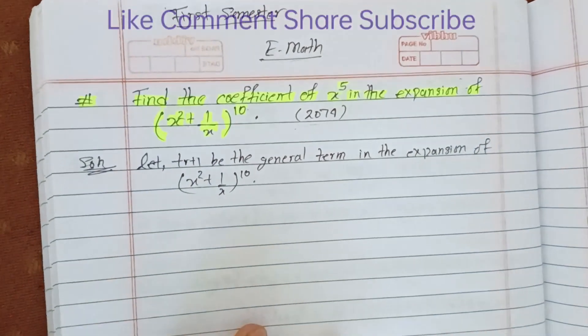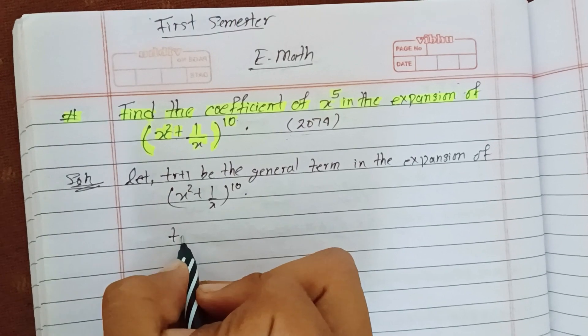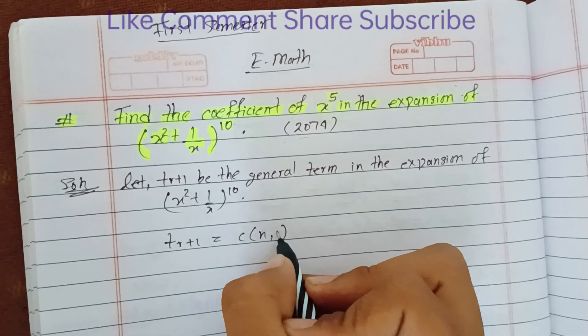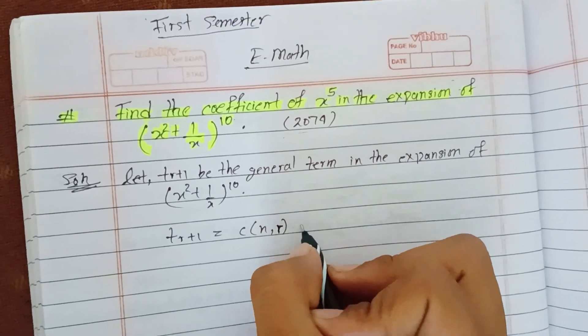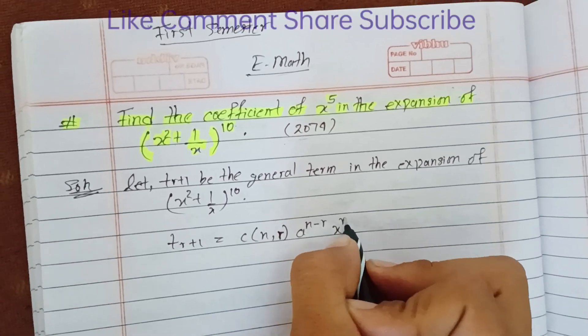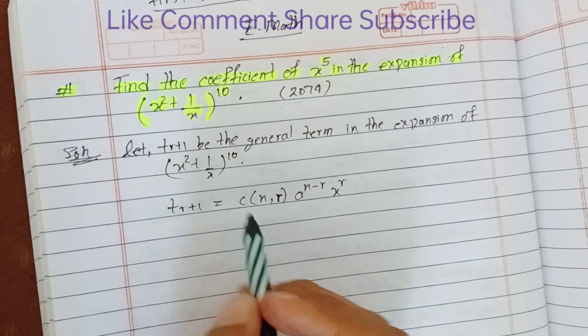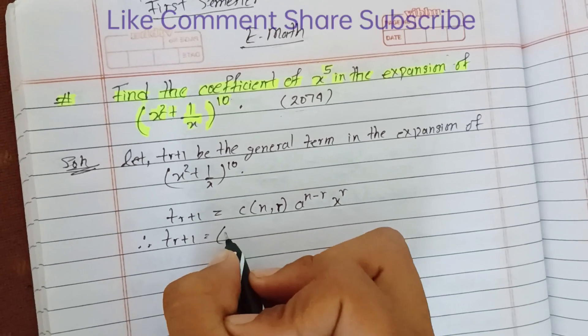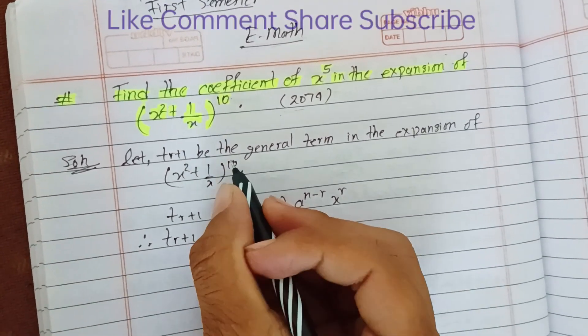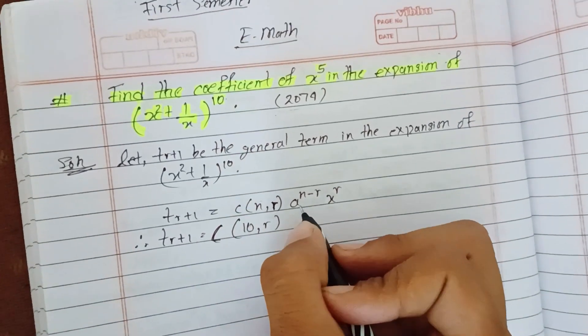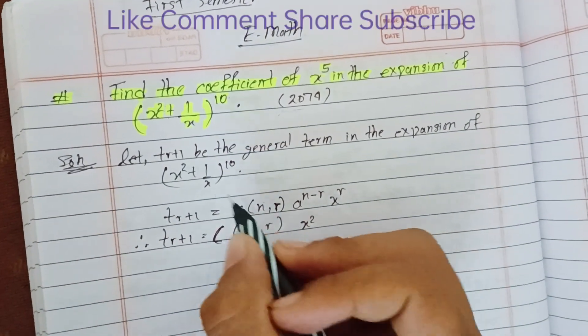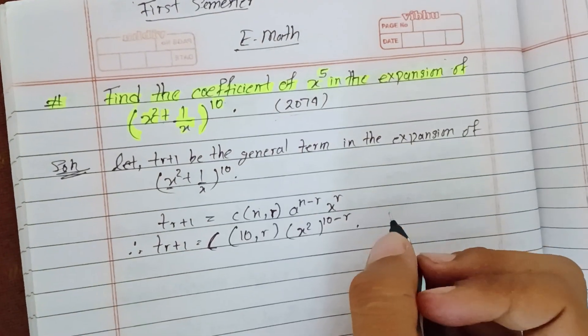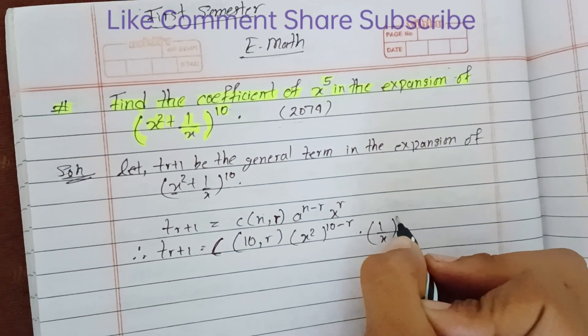The general term T_(r+1) equals C(10,r) times (x^2)^(10-r) times (1/x)^r.